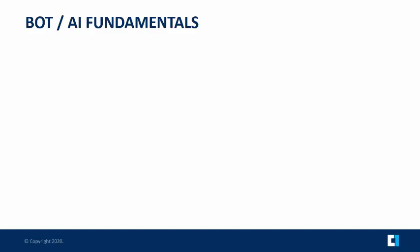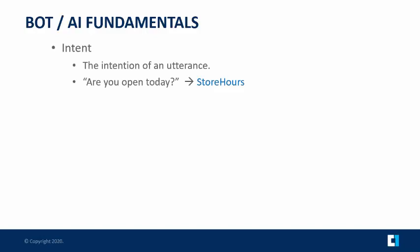The next several slides cover the fundamentals of artificial intelligence and bot building. These apply to any platform and to all bots, from the tiniest to the most complicated. It begins with the intent — the intention of an utterance. An utterance is either spoken or typed speech. A simple example: 'Are you open today?' The intent from that could be store hours. There are many different ways you can ask that question, and they will all distill down to store hours.